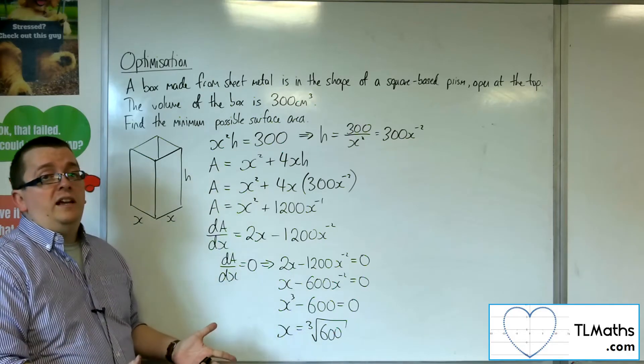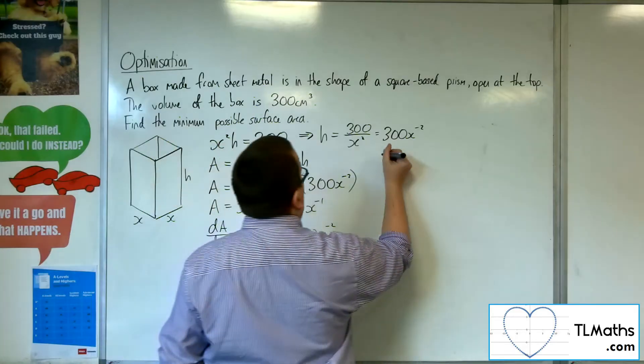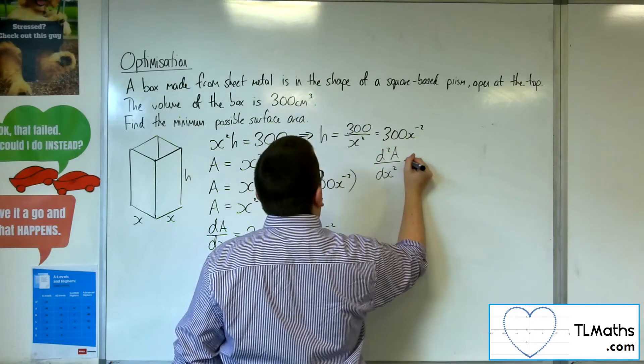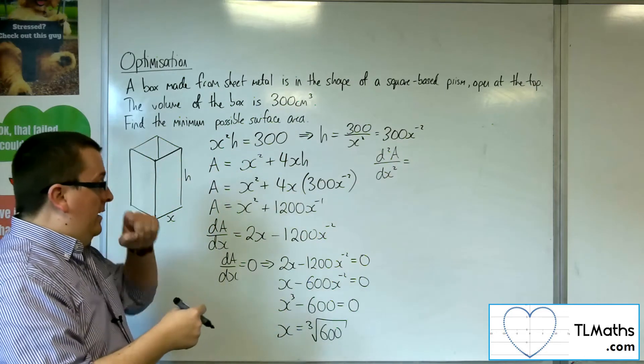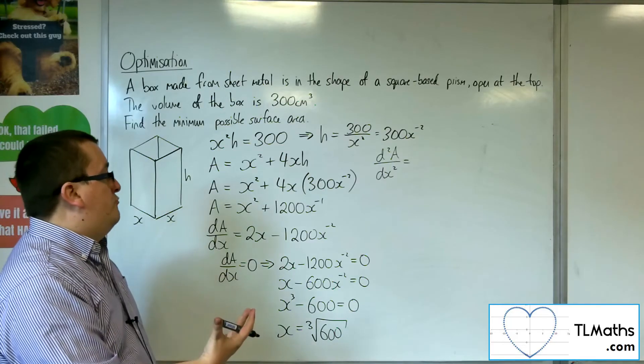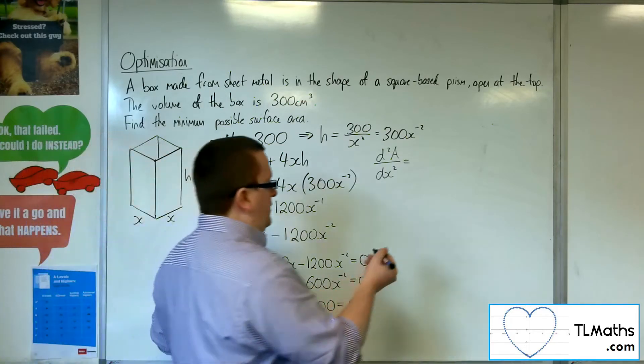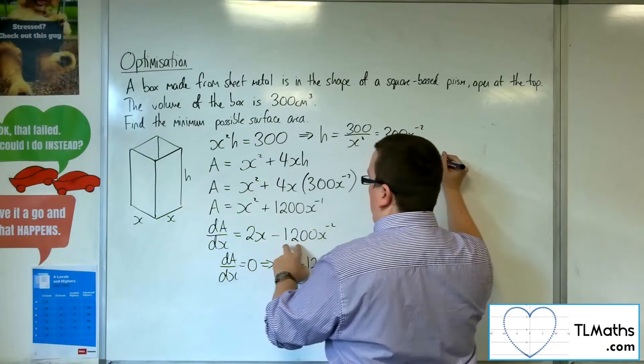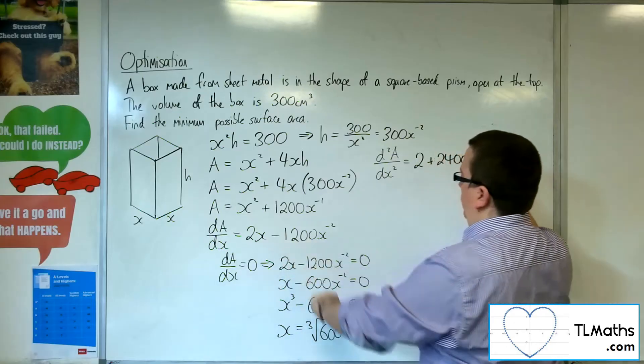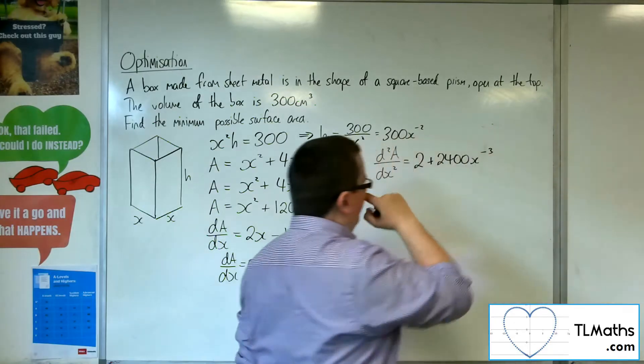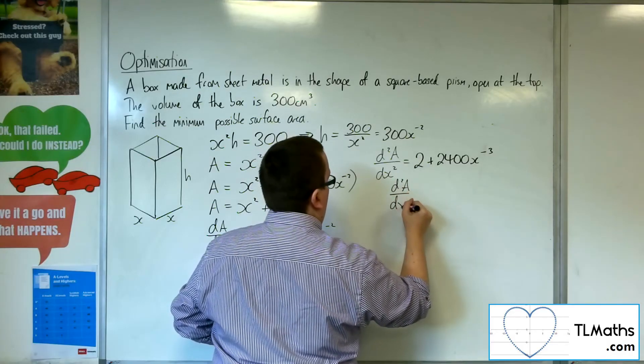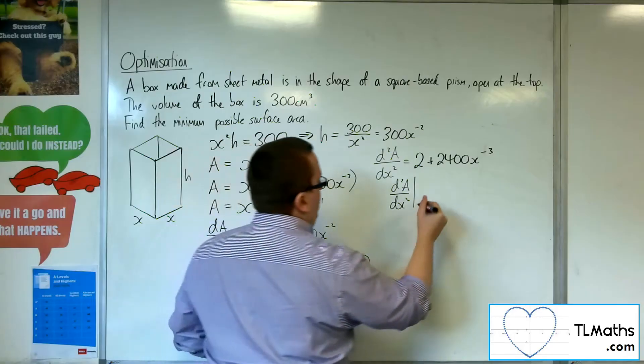Now I want to check that this is going to give me a minimum value. So I'm going to have to figure out the second derivative, substitute it in, and I should get a positive value, and hence a minimum. So differentiating again, I'm going to get 2, and then the minus 2 multiplies with the minus 1200, so plus 2400x to the minus 3. Okay, then I want to substitute in x equals the cube root of 600.